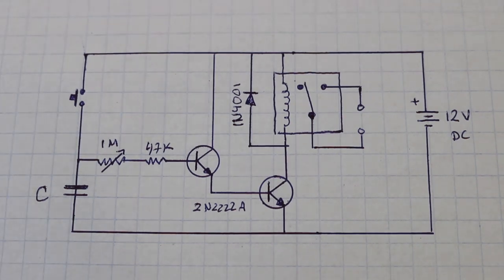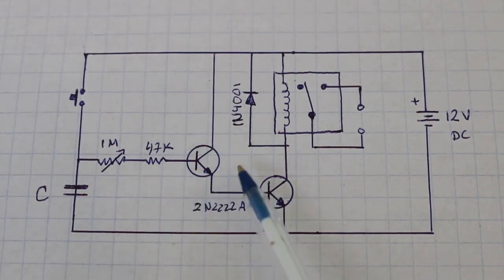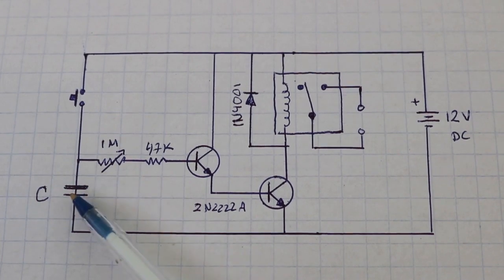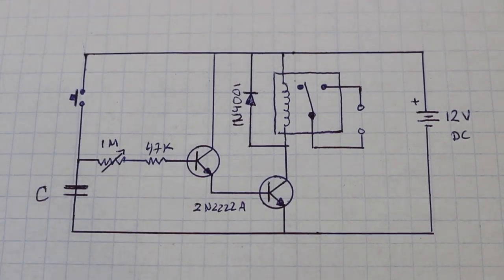The time that the circuit is working is controlled by the capacitance and the resistance. More capacitance or more resistance will result in more time.